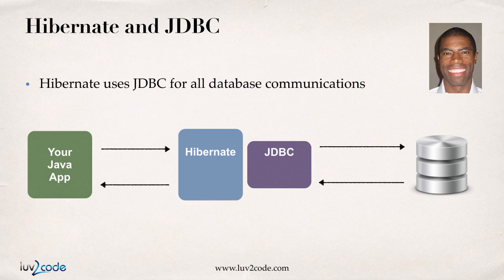Hibernate is just another layer of abstraction on top of JDBC. When your application uses the Hibernate framework, your app will store and retrieve objects using the Hibernate API. In the background, Hibernate does all of the low-level JDBC work — submitting the SQL queries and so on. So Hibernate does a lot of the low-level work for you, but in the background it all goes through the standard JDBC API.